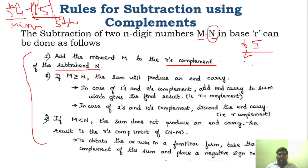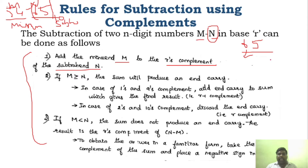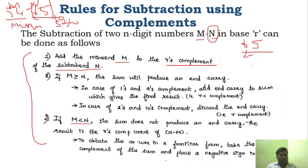You need to find out the R's complement of the subtrahend, and then you have to add it to the minuend. That is the first step. After adding, one of two cases can occur: it can produce a carry, or it will not produce a carry — depending on whether M is greater than N or M is lesser than N.